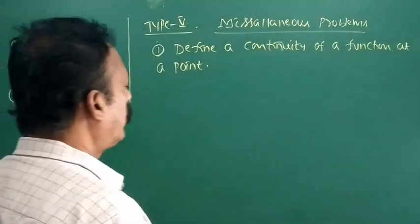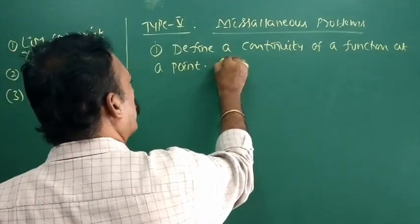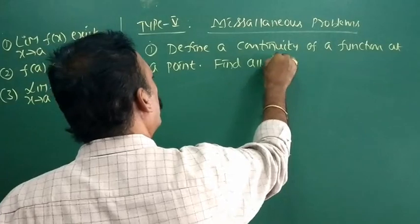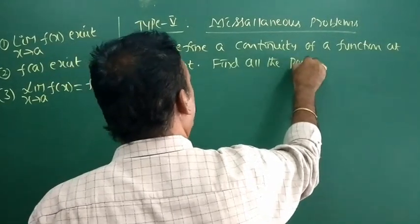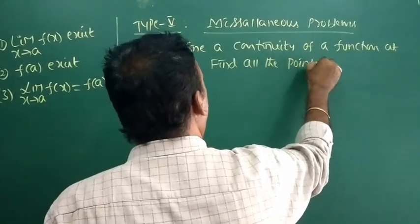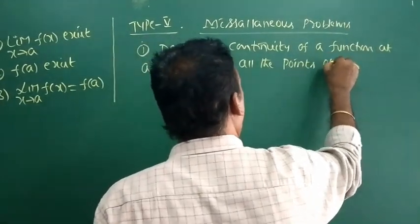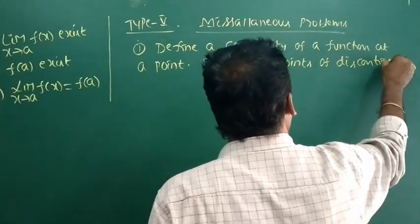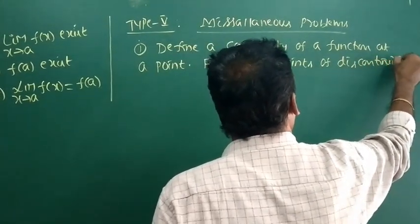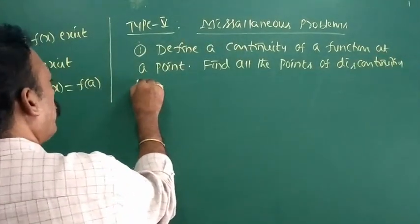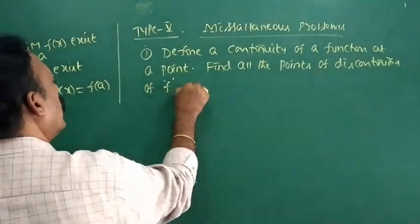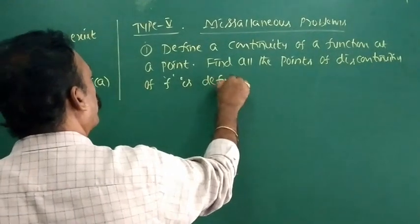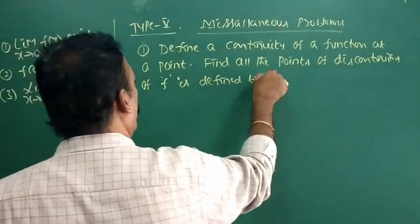This is the first part. Now the second part: find all the points of discontinuities of f, defined by the point.